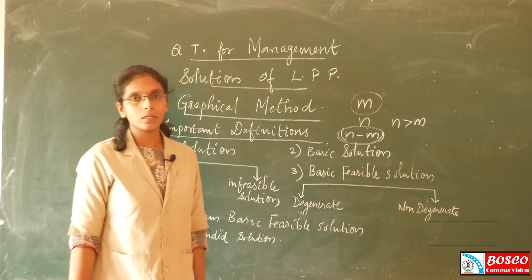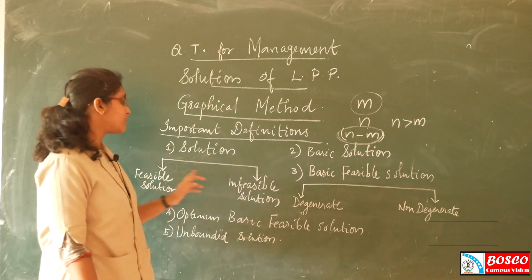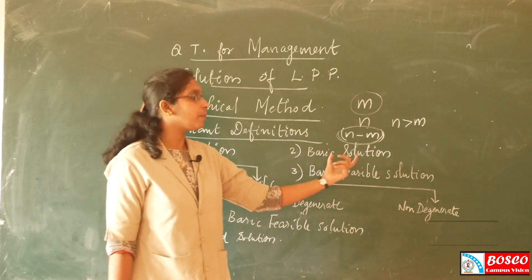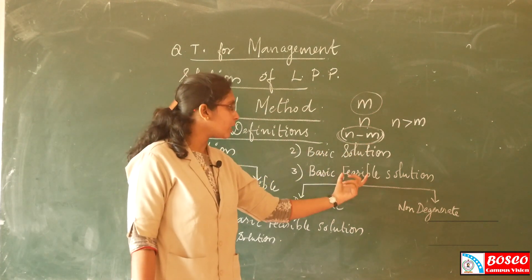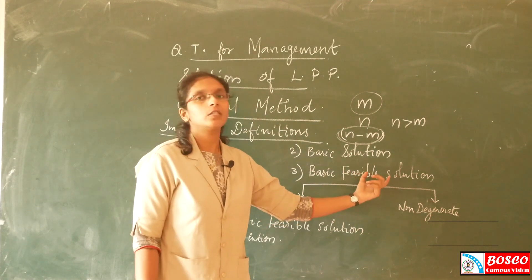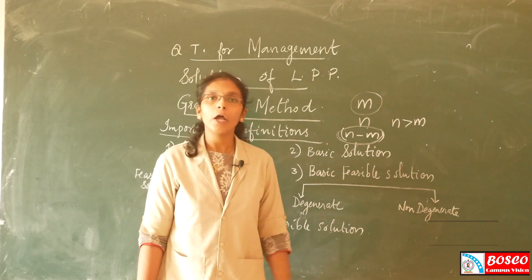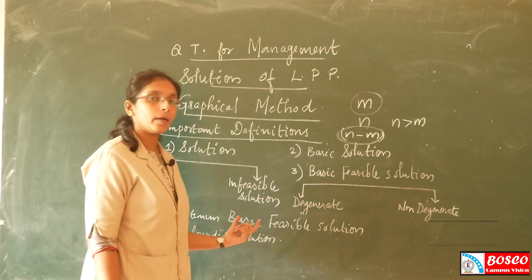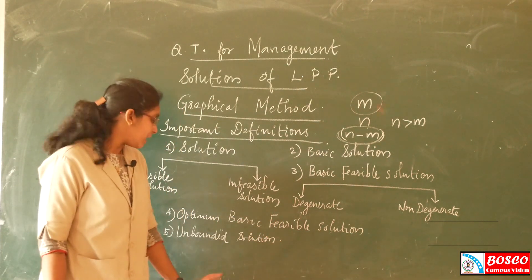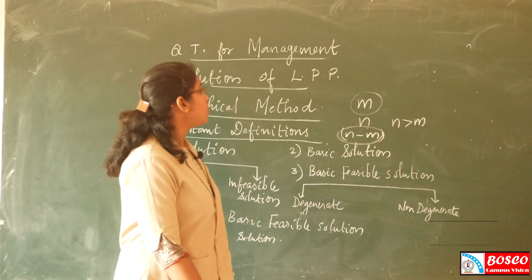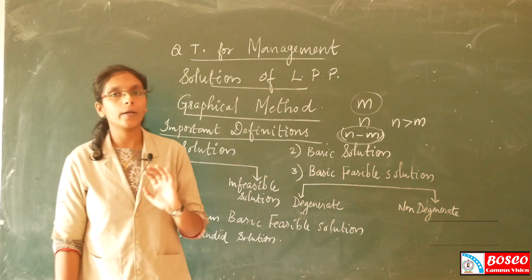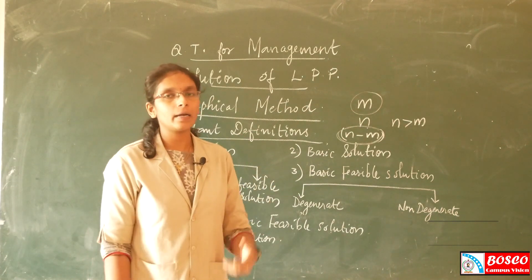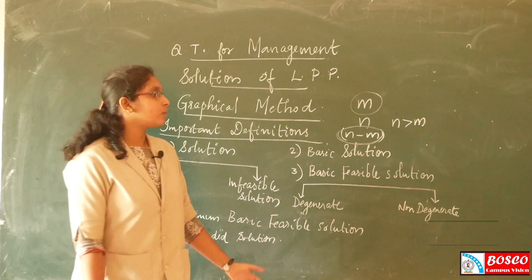In this session, we covered the definition of Solution, its classification into feasible and infeasible solution, Basic Solution, Basic Feasible Solution — which is of two types: degenerate and non-degenerate — Optimum Basic Feasible Solution, and Unbounded Solution. In the next session, we will use the Graphical method to solve LPP problems.